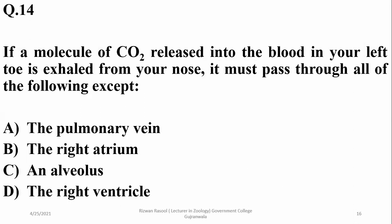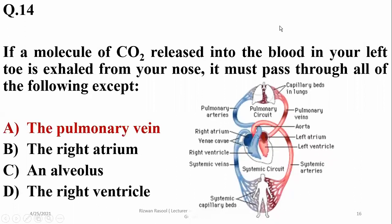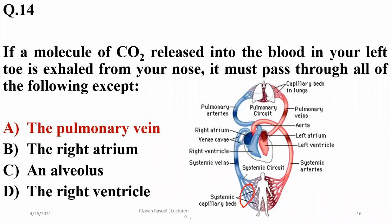Question fourteen: if a molecule of CO2 released in your left toe is exhaled from your nose, it will not pass through the pulmonary vein. CO2 from body tissues is released into the right atrium, then the right ventricle, moves via pulmonary arteries into the lungs, and is exhaled — so alpha is the answer.